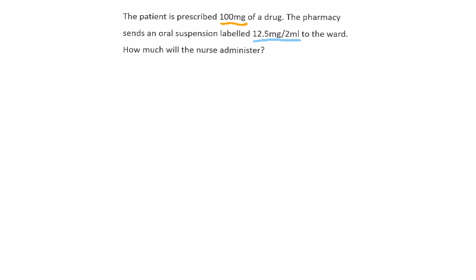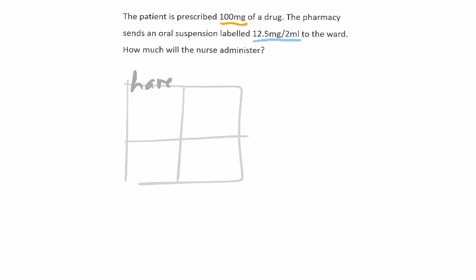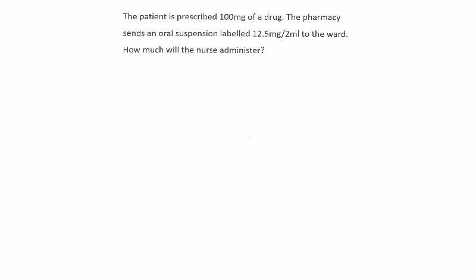It doesn't matter which method we're going to use. If we use the box method, we first identify what we have, enter it in the box, then enter what we want — giving us three quantities in the box. Or if we use the formula method, which is the want over have times the volume — sometimes tablets, a third quantity basically. Either way, we need to identify the want and the have in this word problem.